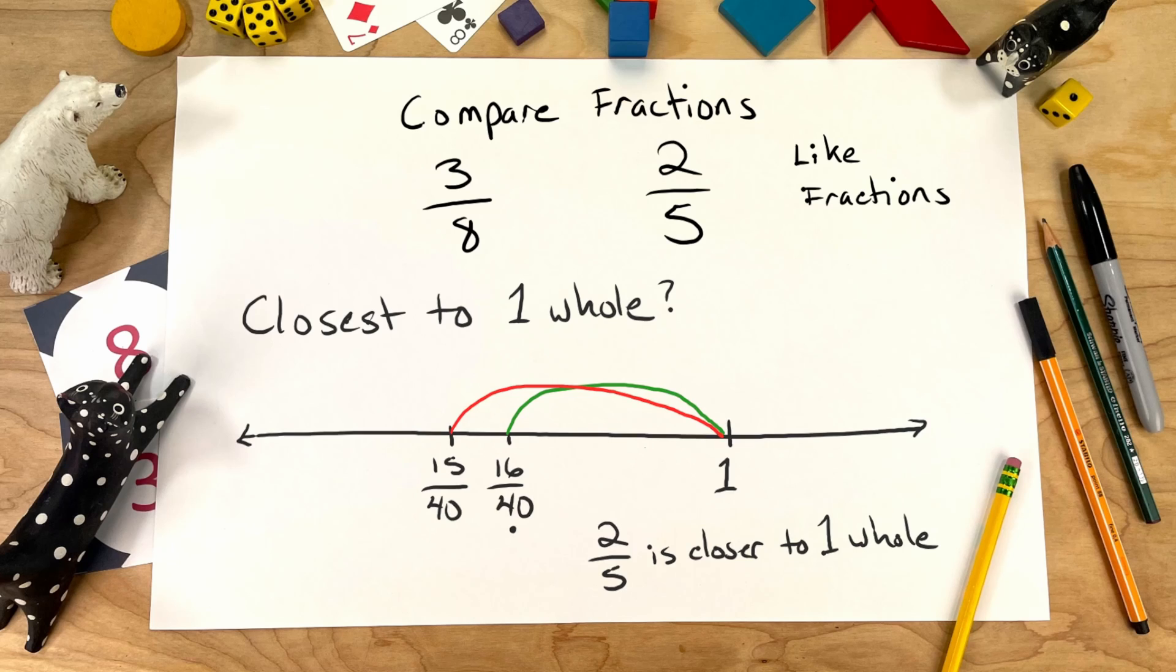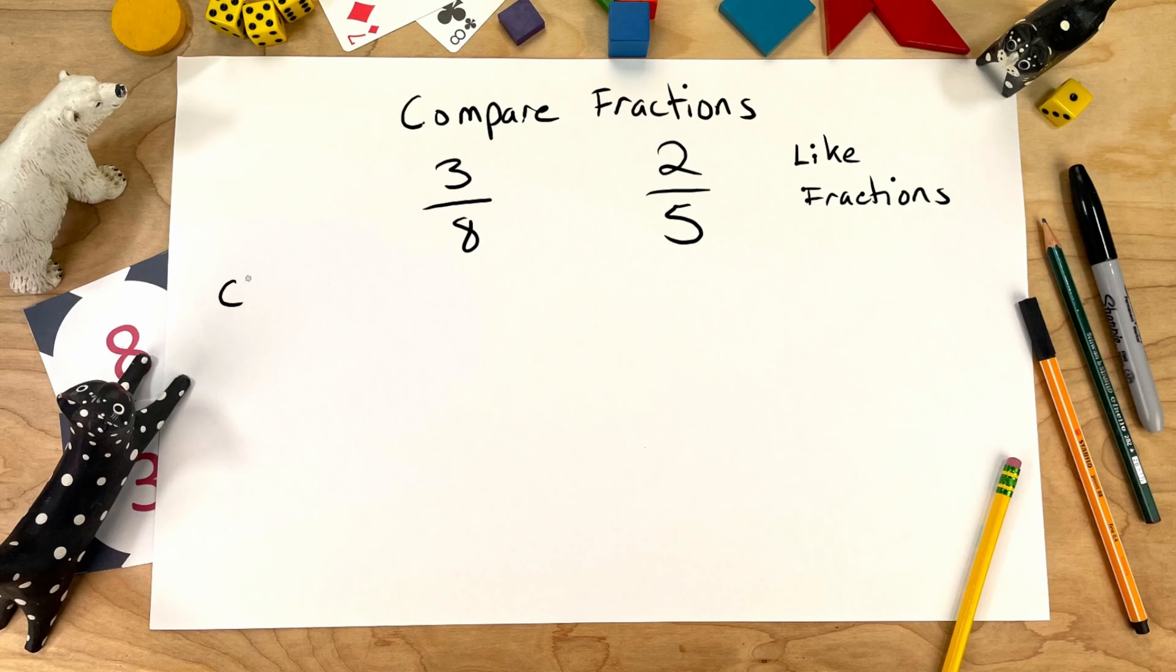Let's do one more. Which of the two fractions is closest to one half? Let's use a number line again. We'll put out one half maybe about here. Again, 3 eighths is the same as 15 fortieths. 2 fifths is the same as 16 fortieths. Which of these two is closest to one half?